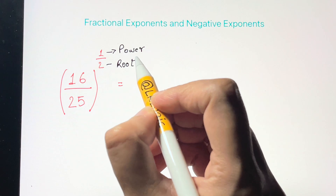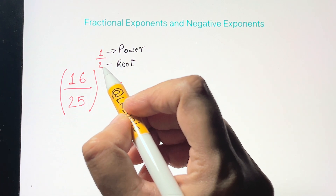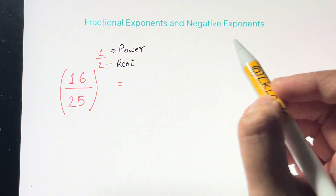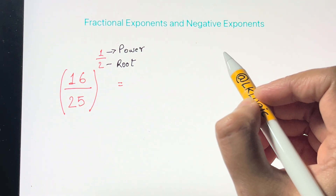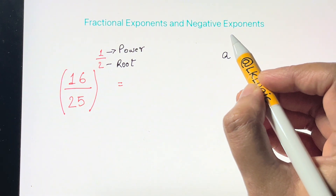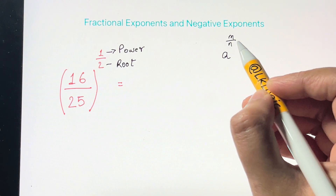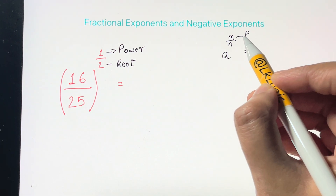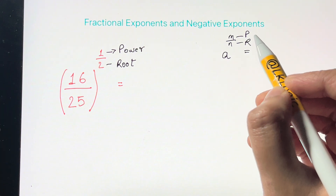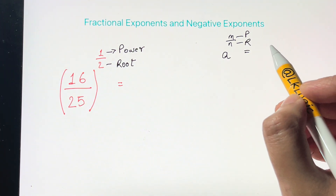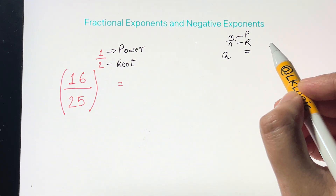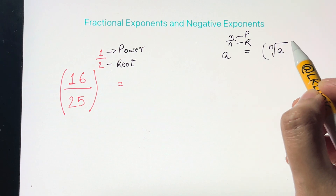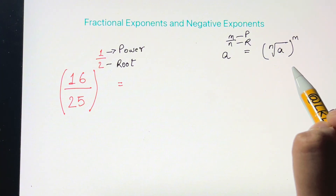So here you have a square root and the power is 1. If you have something like a to the power of m over n, the top is the power and the bottom is the root. You can write it as the nth root of a, and then apply the power m.